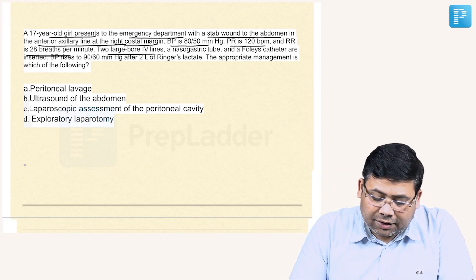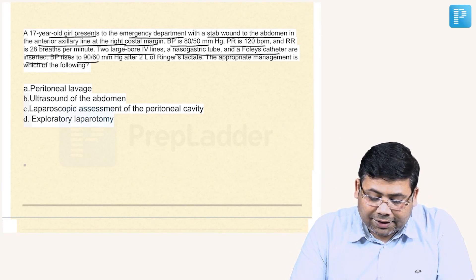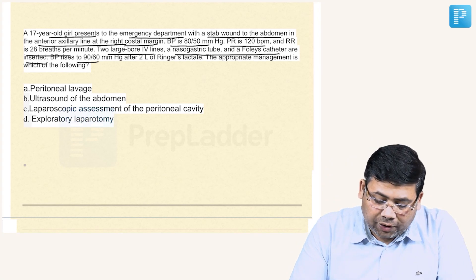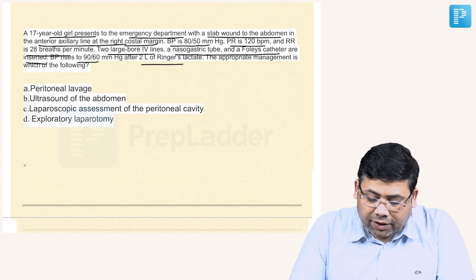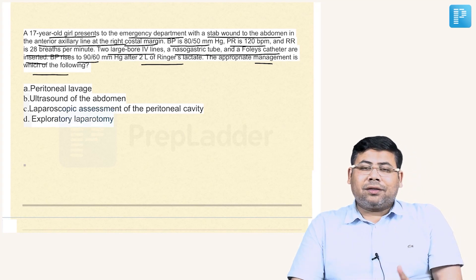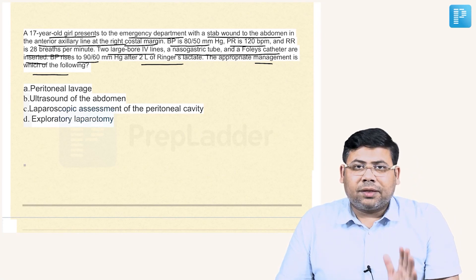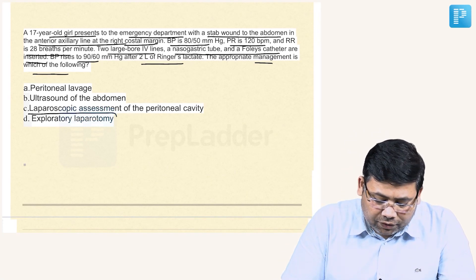Two large bore IV needles are placed, a nasogastric tube and Foley catheter are inserted. BP rises to 90/60, meaning the patient is responding after two liters of Ringer's lactate. Now, appropriate management for the following: try to understand this is a penetrating injury to the abdomen, and hence this is an unstable patient. I will only prefer to go for exploratory laparotomy.